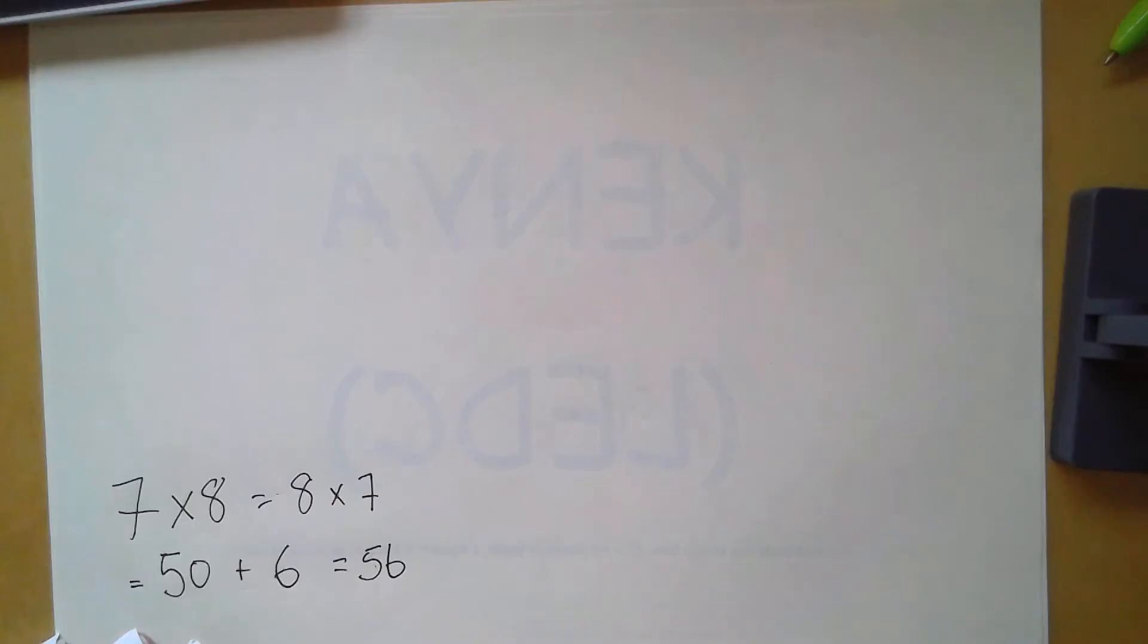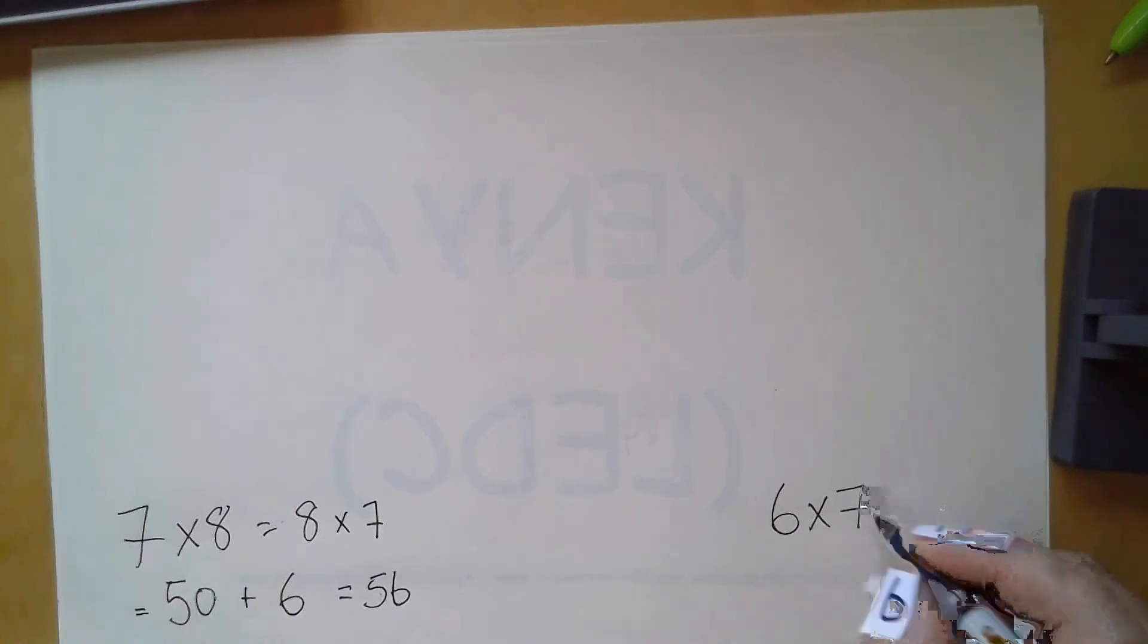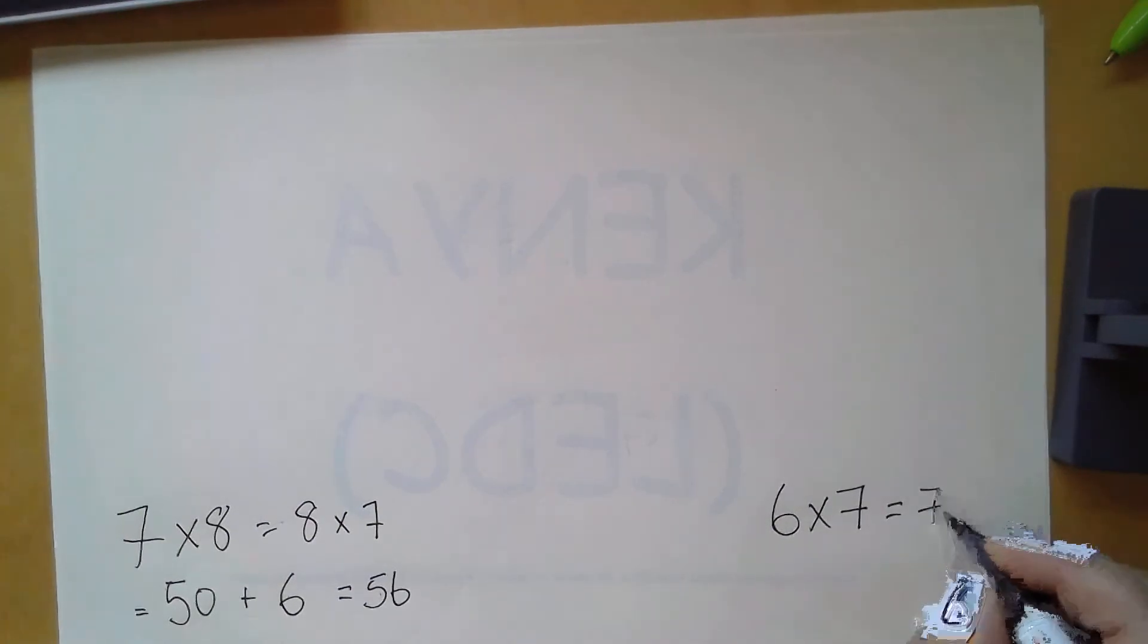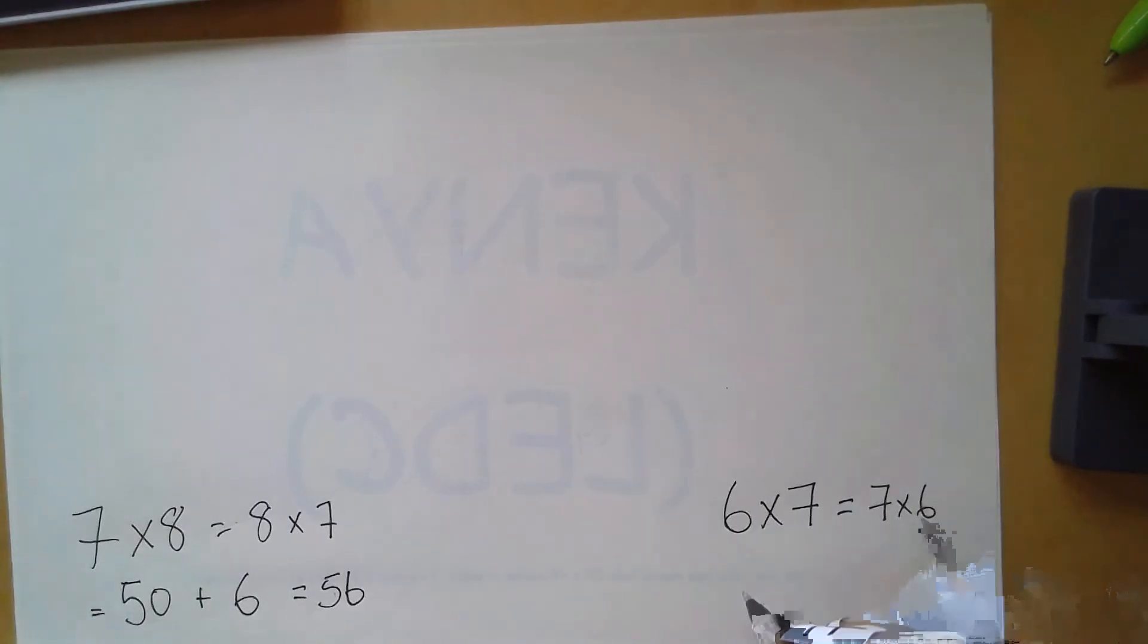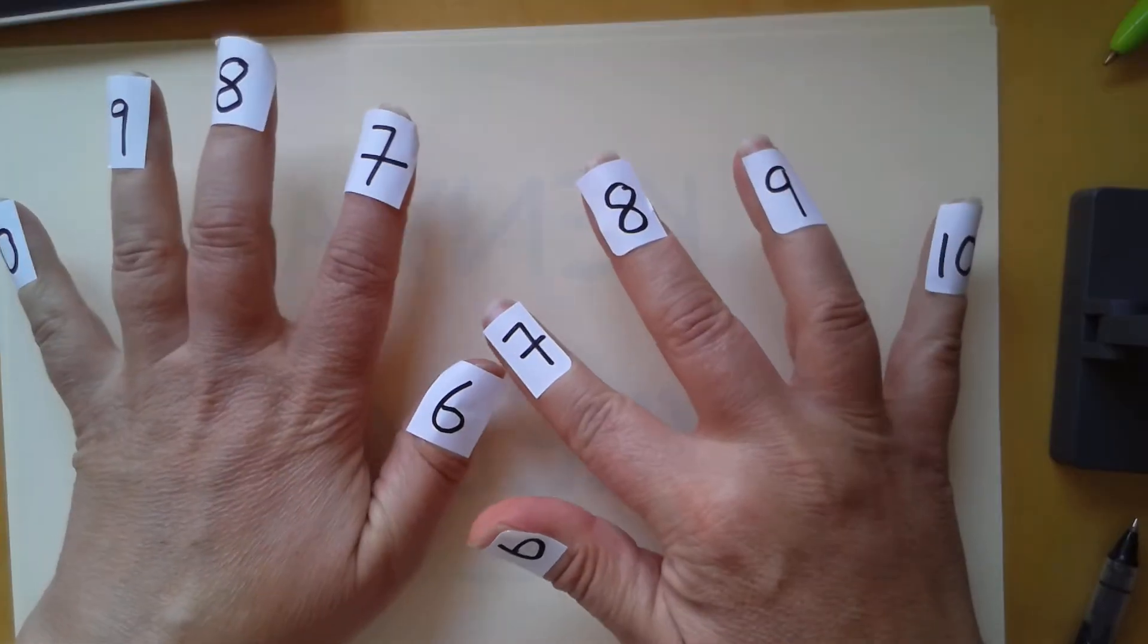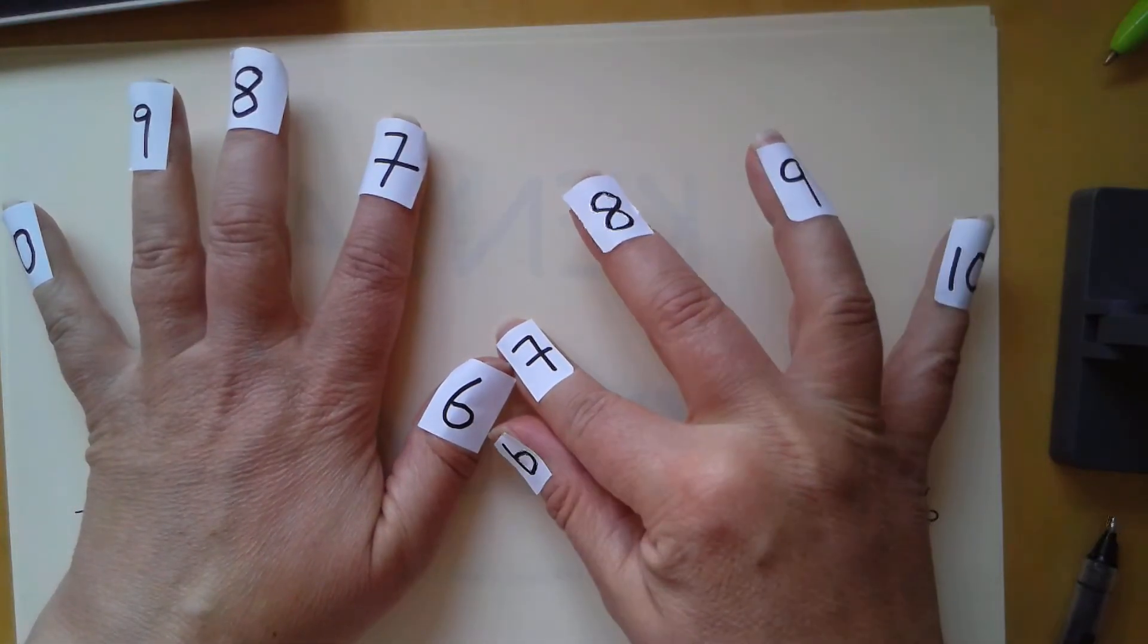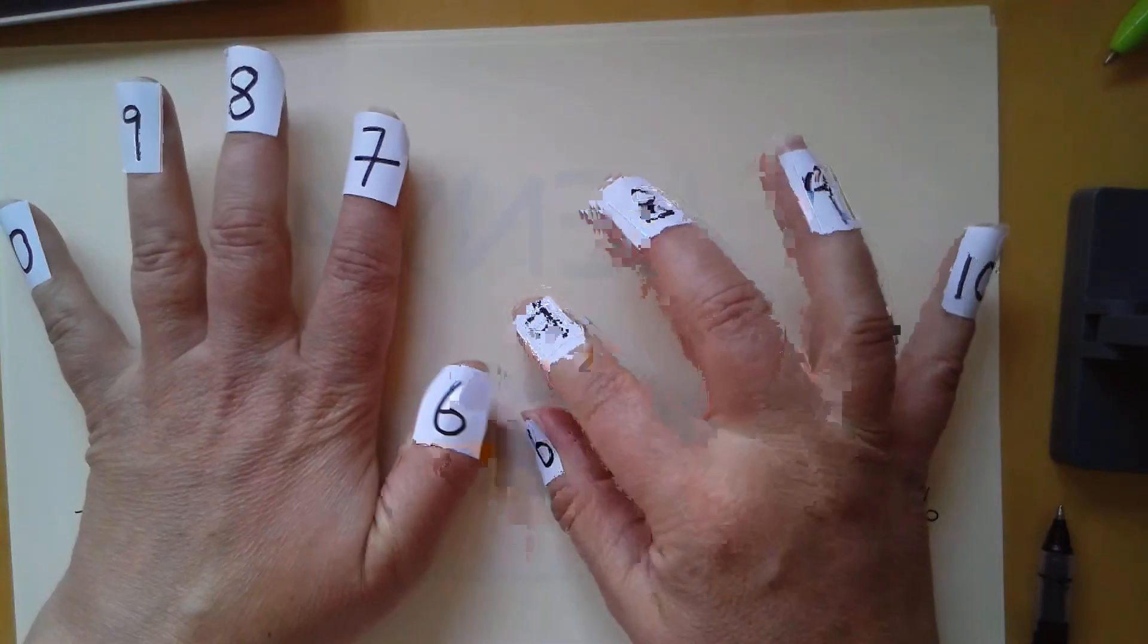What about six multiplied by seven? This is another one that I find really tricky. Six multiplied by seven or seven multiplied by six. So six on one hand, seven on the other. We're looking at counting the fingers that are touching and the fingers that are underneath.